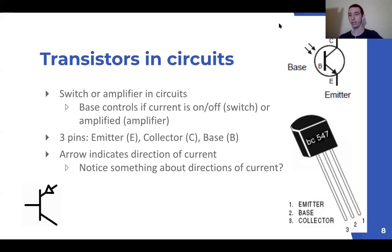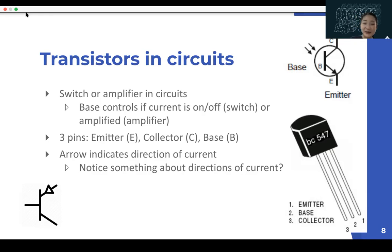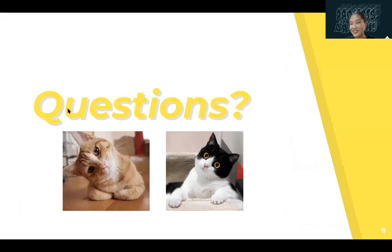The transistor has three pins: emitter, collector, and base. The diagram shown is for an NPN transistor. The arrows indicate the direction of current flow. The main type of transistor we're using is the BJT — bipolar junction transistor — which is what you use when building physical circuits on breadboards. Your computers and phones use a different kind called MOSFETs, which are more complicated.